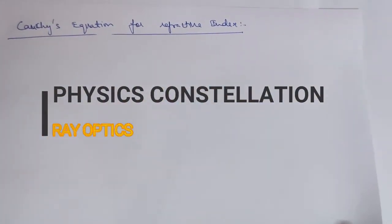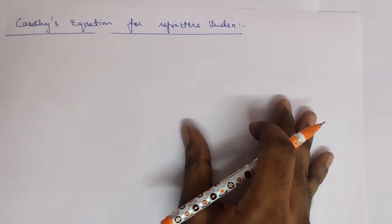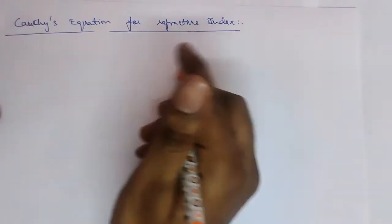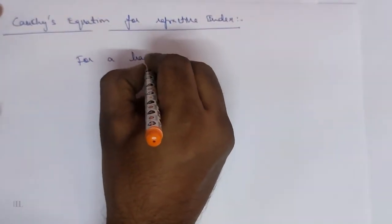Cauchy's equation for refractive index, dispersion. So first we will write Cauchy's equation for a transparent medium.